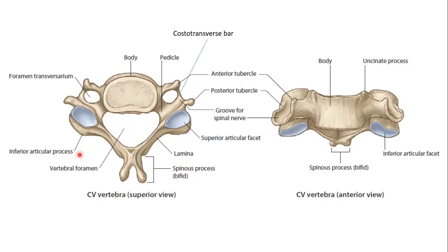Now the vertebral foramen: it is triangular in shape and is larger than the body. The vertebral foramen of a cervical vertebra is larger than the body and is triangular because the pedicles project backwards and laterally from the body, giving a triangular shape to the vertebral foramen.